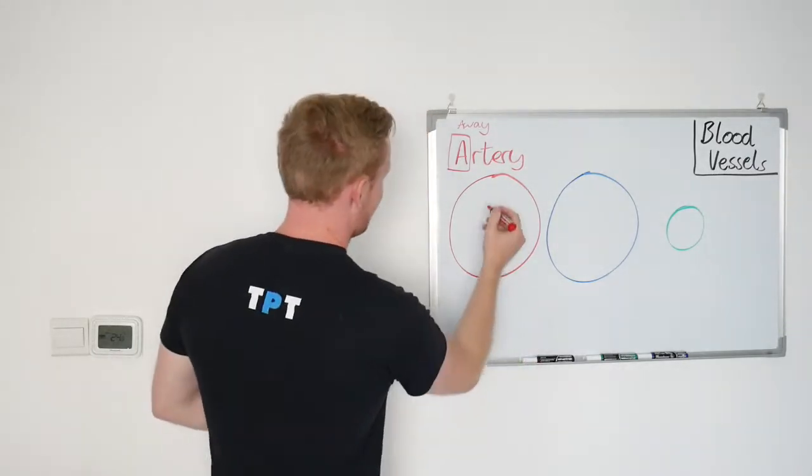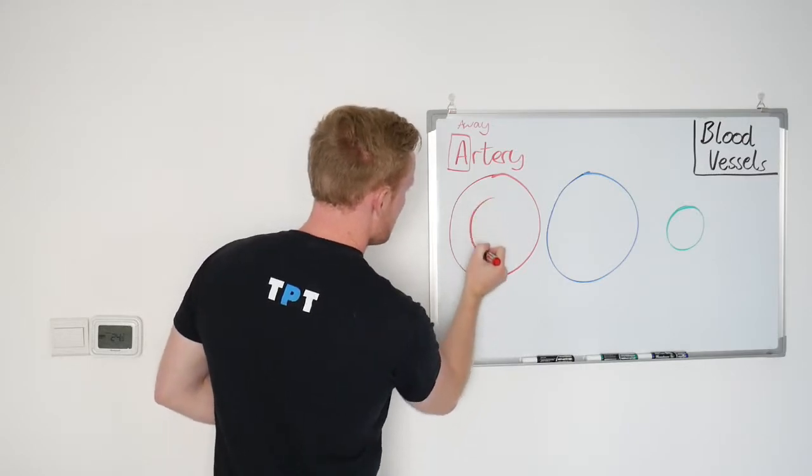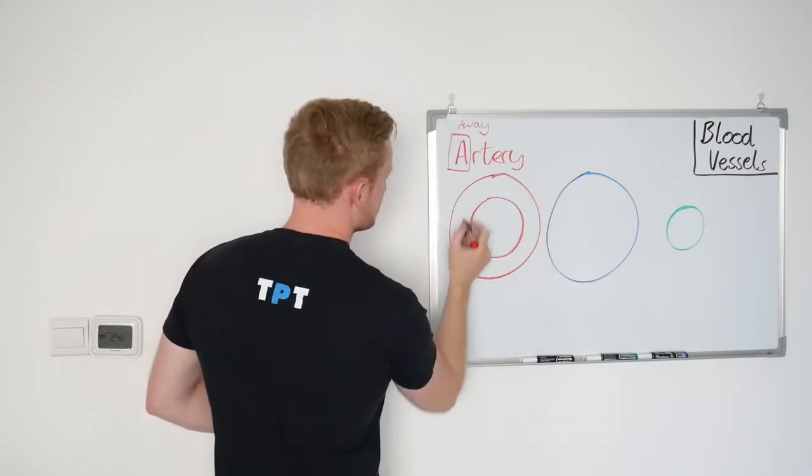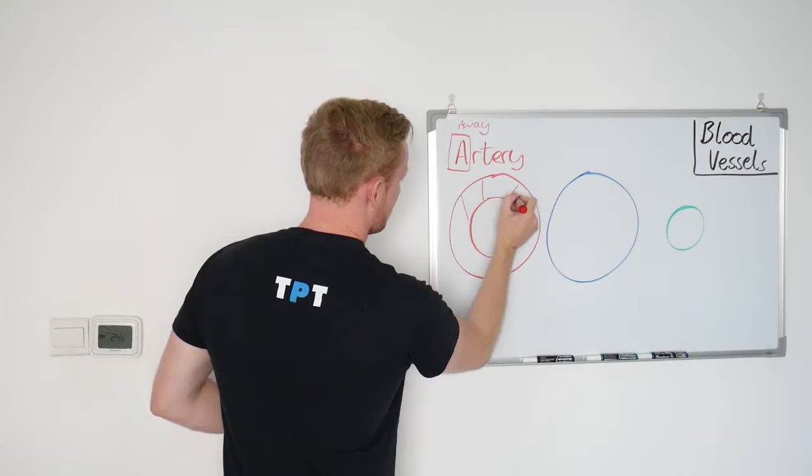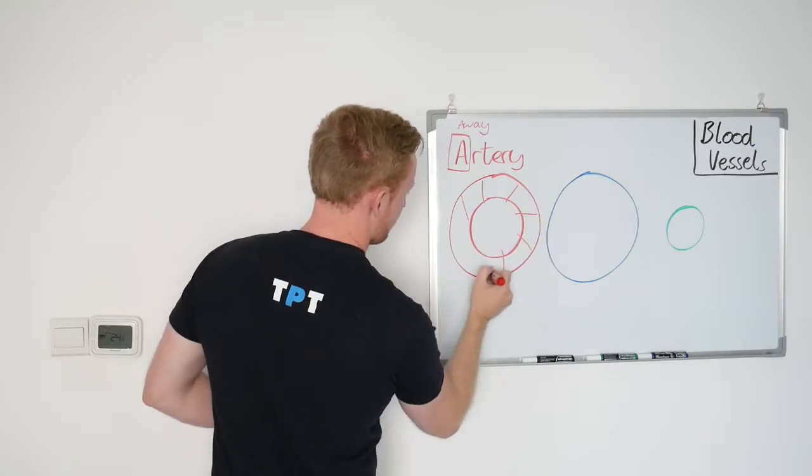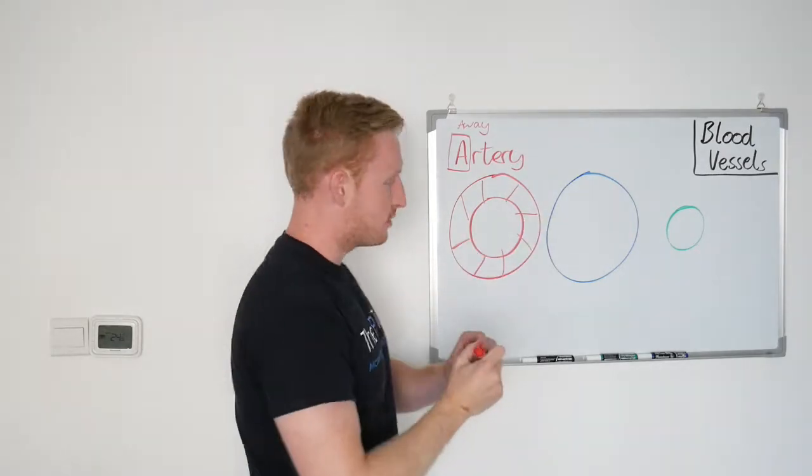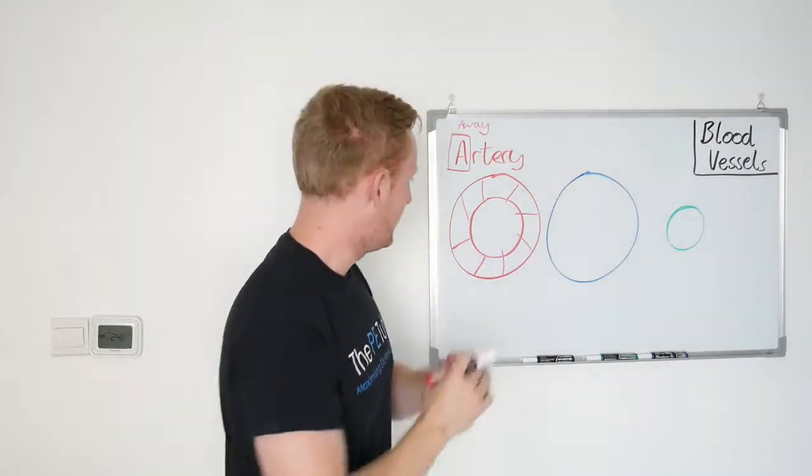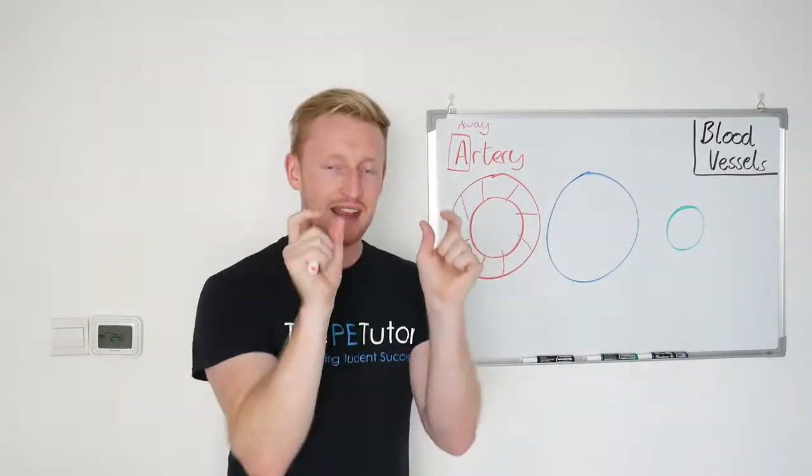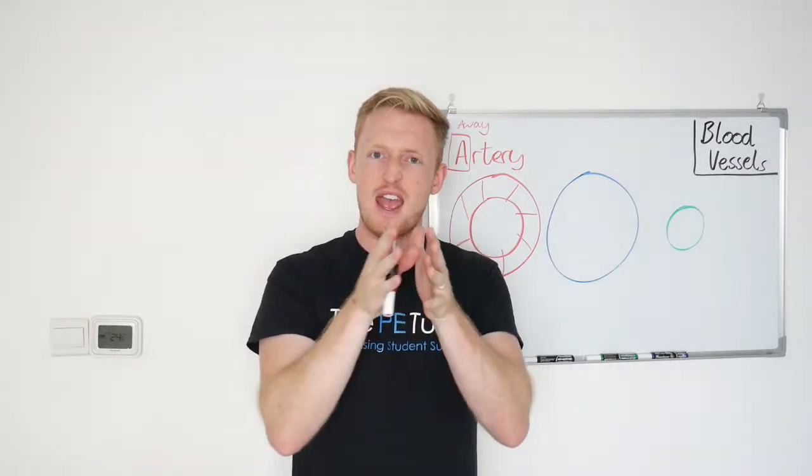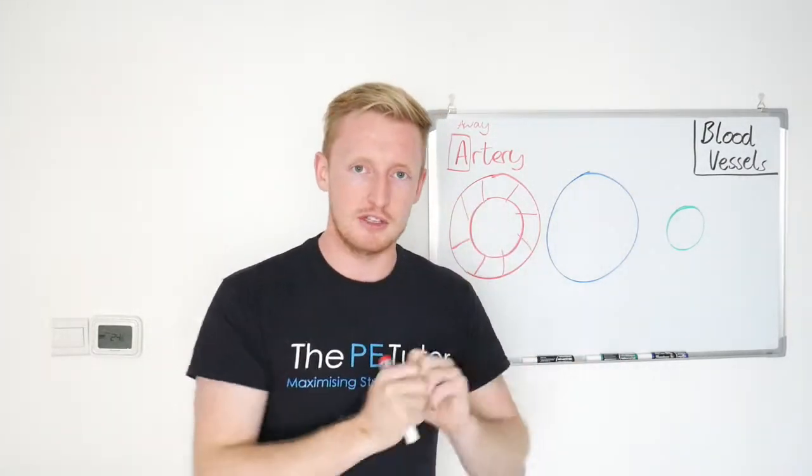That will tell us a little bit about what the artery needs to be built like in order to carry blood at high speed and high pressure. The first thing is that it has a very thick wall. This area here, the wall of the artery, very thick. It's there to expand. It's quite elastic in nature. It expands with the pressure but it's thick enough to withstand it so it doesn't tear, rupture and blood is lost.